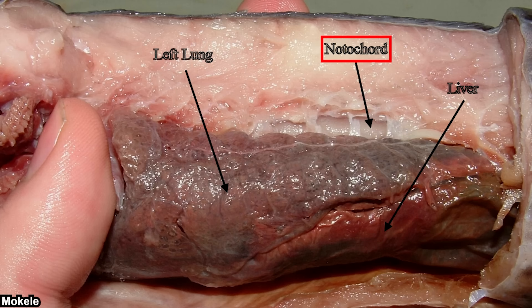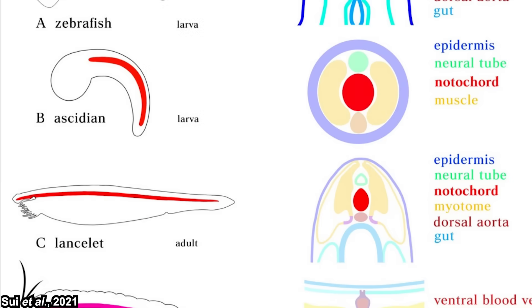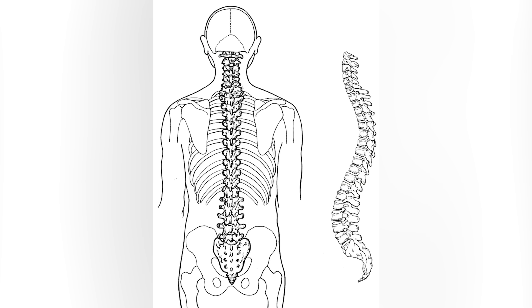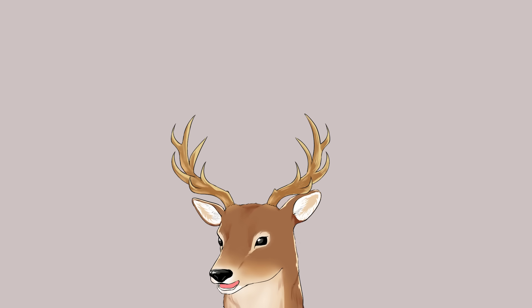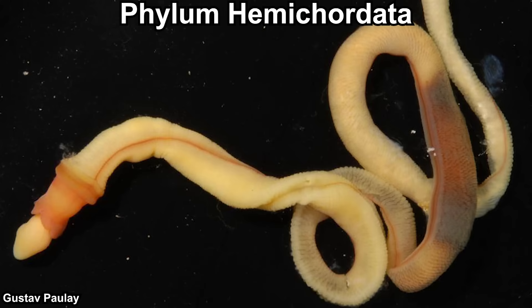The basis of this classification was pretty simple: the existence of a notochord, which is an elastic, semi-flexible, rod-like structure along their body. This is basically the axis of their embryonic development. In invertebrate chordates, the notochord also becomes the main attachment point for their muscles, which enables locomotion. In vertebrates, the notochord becomes the core of the vertebrae.